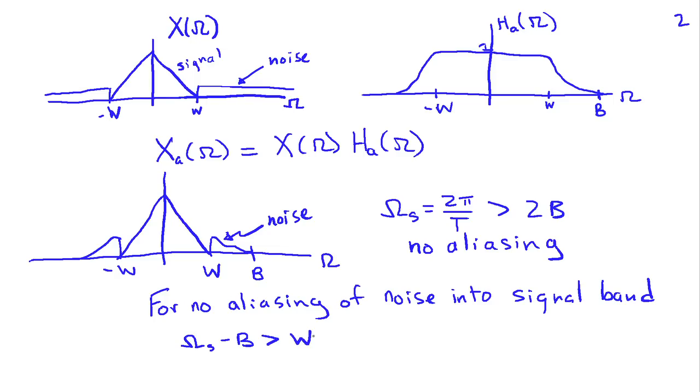Or omega S would have to exceed B plus W. And if our transition band in the filter, that is the distance from W to B, is fairly large, this actually can be a bit of reduction below the requirement for no aliasing at all, which says that omega S has to exceed twice B.